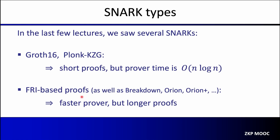We also looked at other SNARK constructions, in particular FRI-based constructions, as well as coding-based constructions like Breakdown, Orion, and Orion Plus. These systems have in practice a faster prover, but unfortunately they generate longer proofs. So one question you could ask is: can we have the best of both worlds — a fast prover that also produces very short proofs?